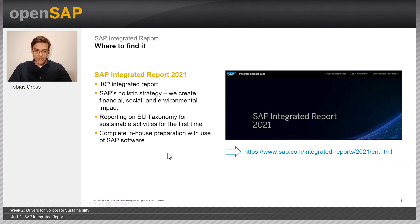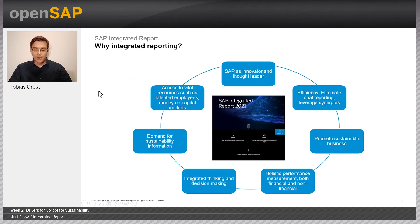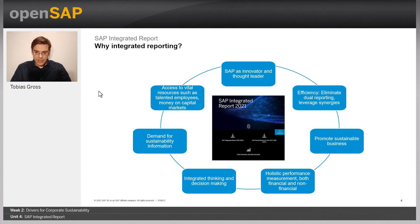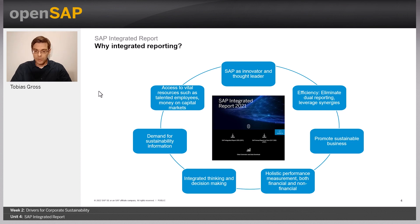Now you might ask: why is SAP putting so much effort into integrated reporting? After all, integrated reporting is voluntary. Well, there are a couple of reasons. The basic idea is to convey a holistic picture of SAP's performance — not only the financial view, but also the social and environmental view. Since SAP is a software company, we also want to be seen as an innovator, a thought leader, a front runner, which is why we are really pushing integrated and sustainability reporting in general. There's also a business component: the integrated report is a great way to promote the sustainability portfolio and solutions that SAP is actually offering.